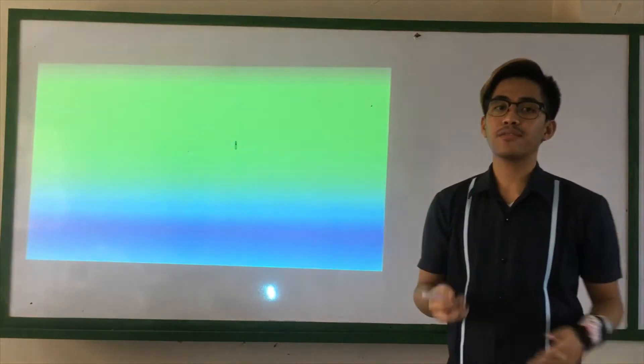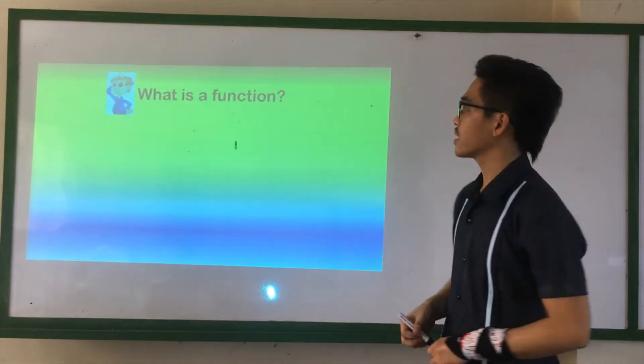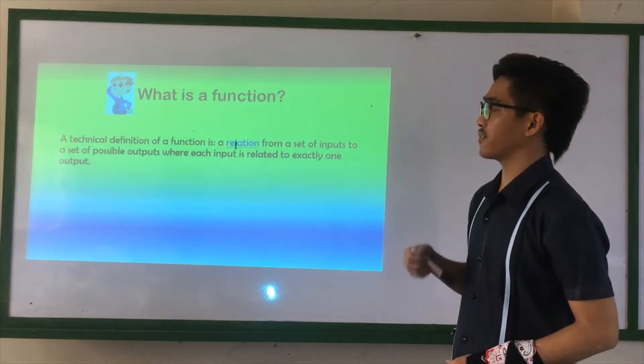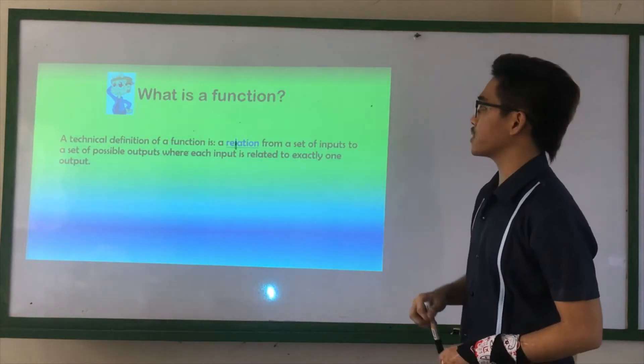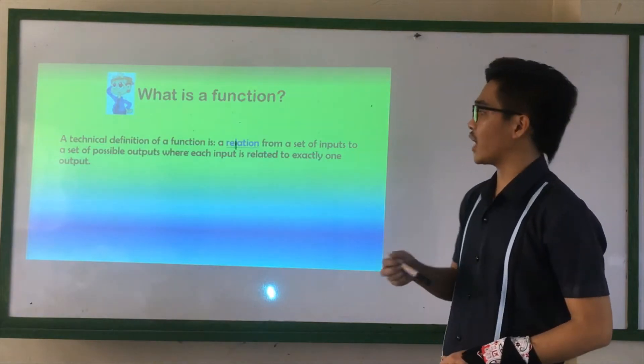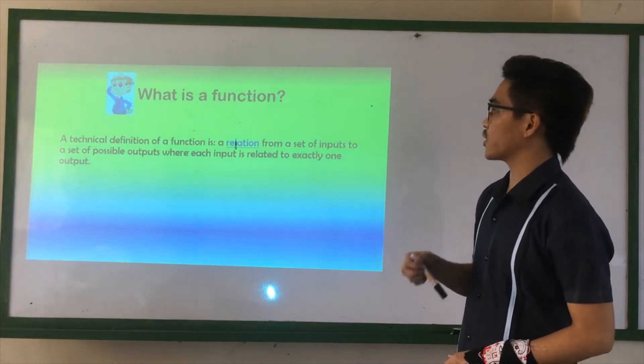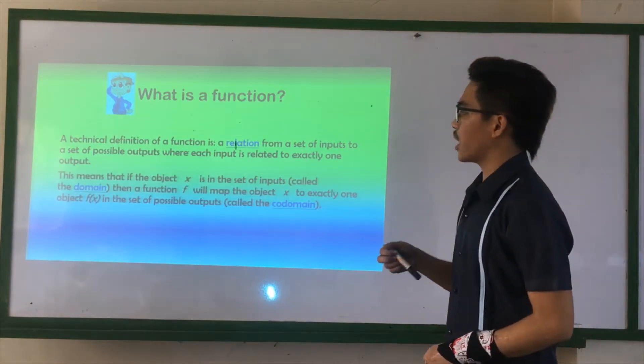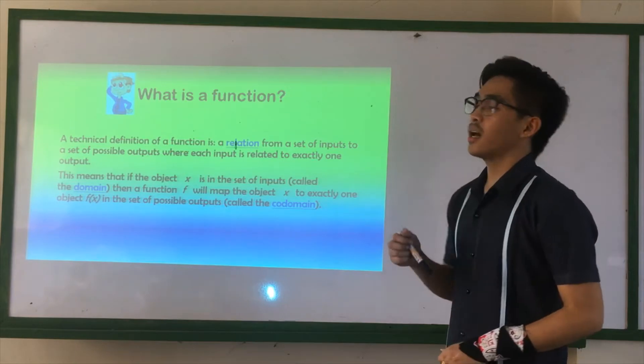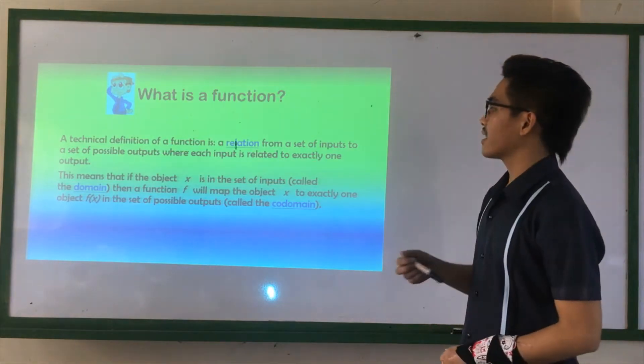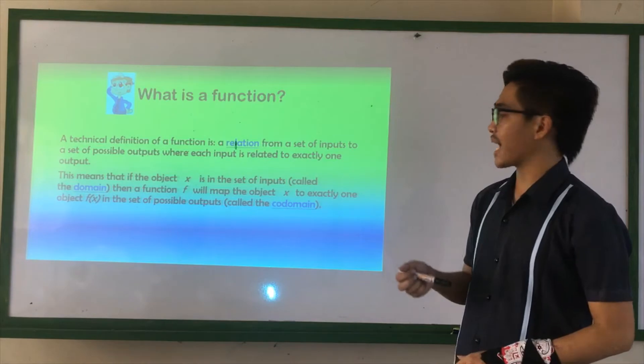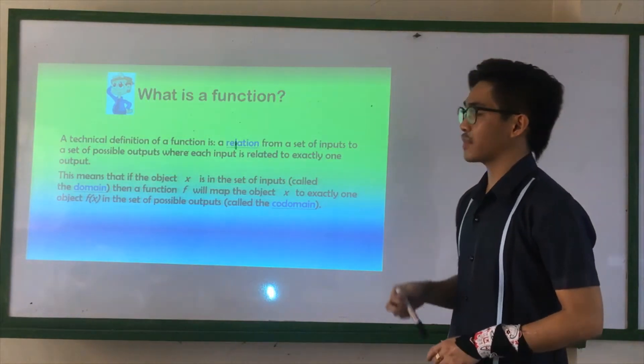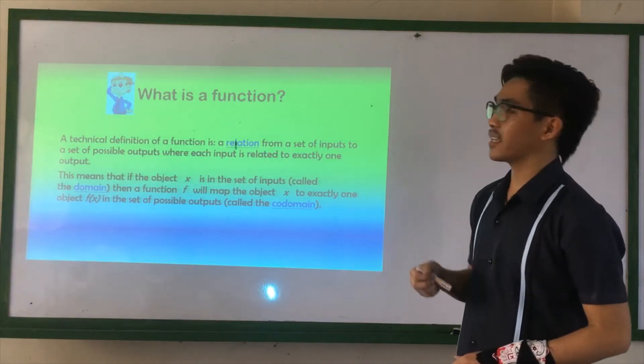This time I will give you a short overview from our previous lesson. What is a function? A technical definition of a function is a relation from a set of inputs to a set of possible outputs where each input is related to exactly one output. This simply means that if the object X is in the set of inputs of code domain, then the function will match the object X to exactly one object, F of X, in the set of possible outputs, which is called the code domain.